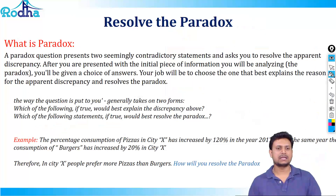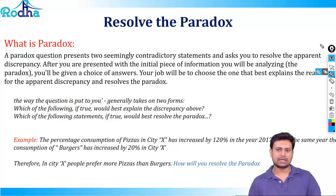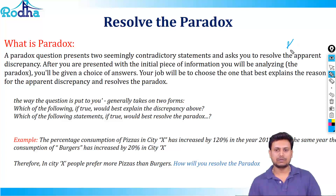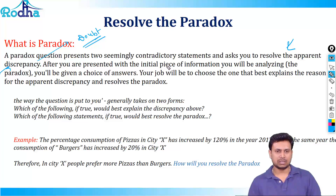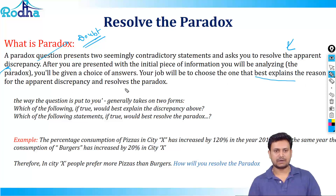The second category we'll focus on is paradox. A paradox is a seemingly contradictory statement — statements that contradict each other. From a logic perspective, a paradox presents two seemingly contradictory statements and asks you to resolve the apparent discrepancy. Discrepancy means doubt. So any form of doubt that exists in the logic of the sentence, the paradoxical question will ask you to solve it. You will be given answer choices and your job is to choose the one that best explains the reason for the apparent discrepancy and resolves the paradox.